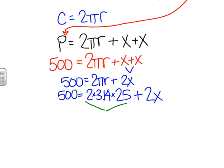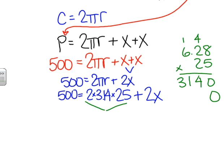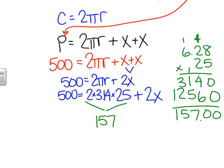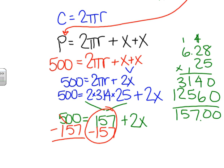So now we're going to start multiplying all of this. So 2 times 3.14 is 6.28. So we're going to multiply that by the radius. So we should get 157. So that actually worked out. It came out to a nice whole number. So 157 plus 2X equals 500. And we can do it from here. We're going to subtract 157 from each side. Here's your zero pair.